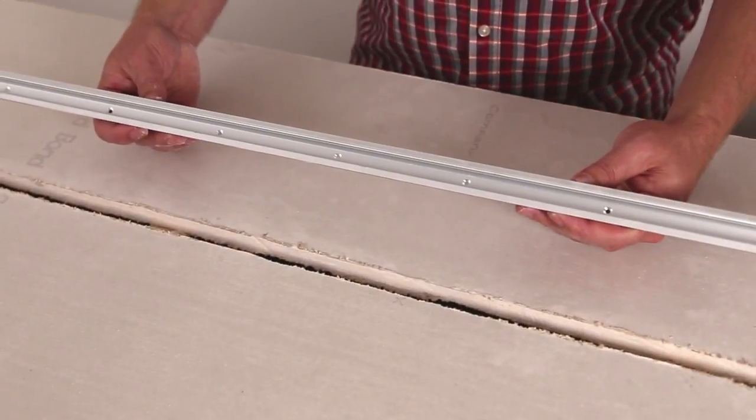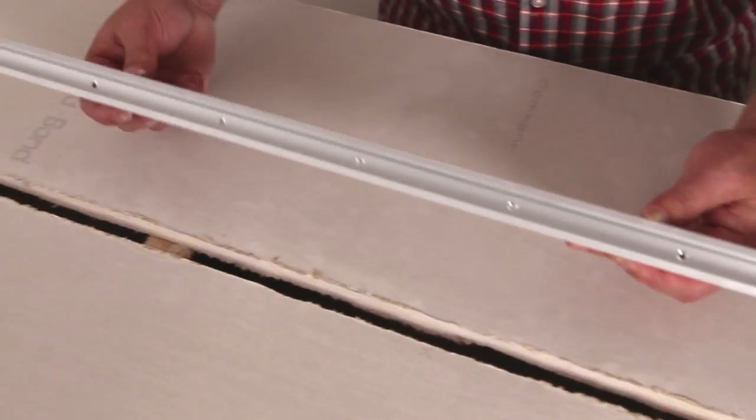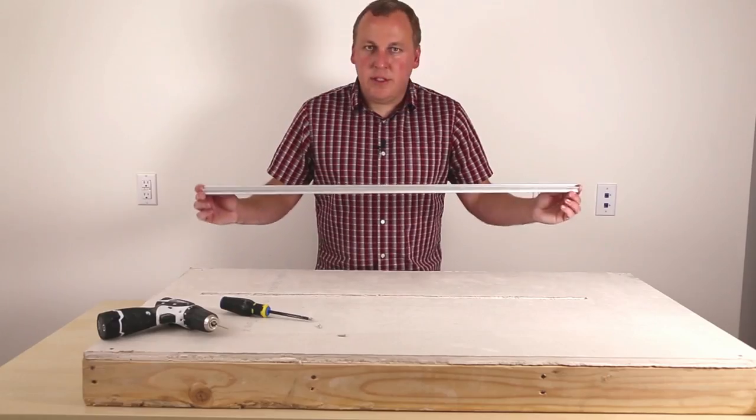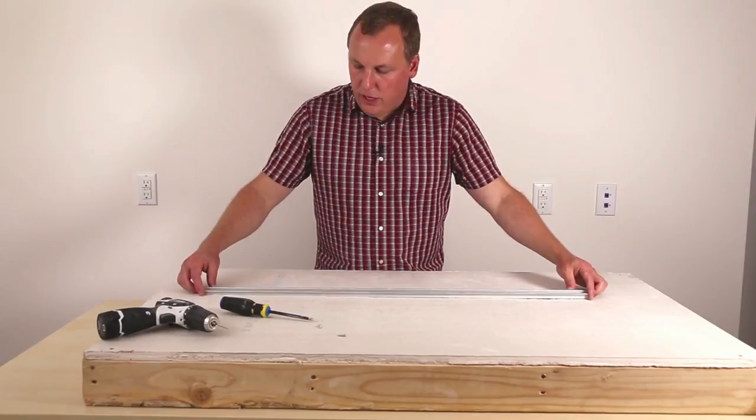Anker 4 channel features a countersunk hole every 4 inches for mounting to the studs in the wall. I'm going to take my aluminum channel, place it in the slot in the drywall.